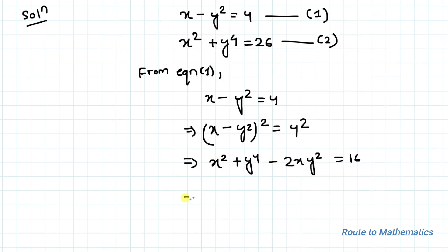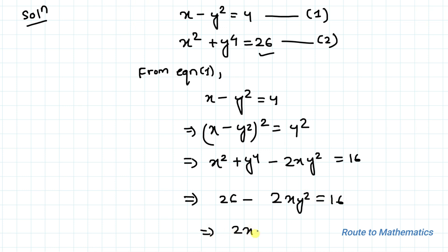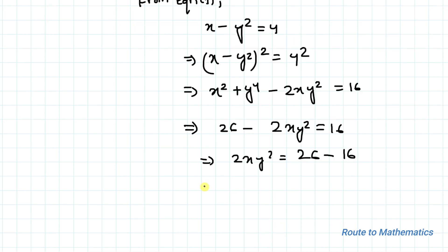From equation 2, we have x² plus y to the power 4 equals 26. Substituting that value in, we have 26 minus 2xy² equals 16. This implies 2xy² equals 26 minus 16, which gives us 2xy² equals 10. Let's take this as equation 3.